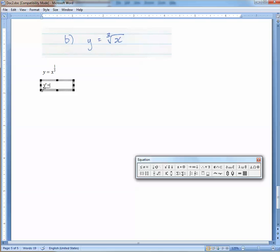The 1 third becomes a fraction out front. Then we have x, but its new exponent is 1 third.